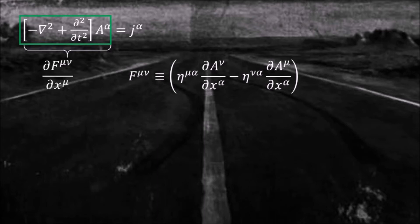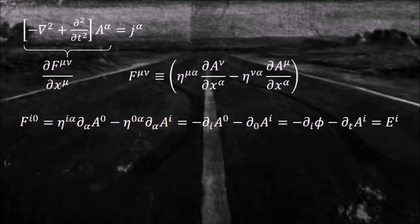But first, let us see what each of the elements of F mean. Let's start with F i zero. Because F is antisymmetric, its diagonal elements are all zero, so i can only be one of the three spatial components. But this is nothing but the ith component of the electric field.